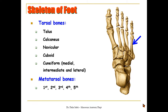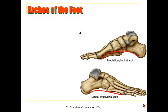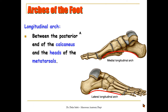For the phalanges, we have proximal and distal phalanges for the big toe, while the rest of the toes contain three: proximal, middle, and distal.